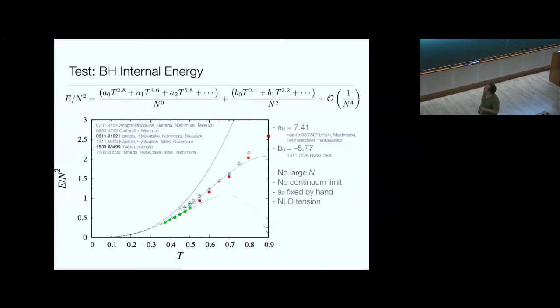One of the things people like to compare is the internal energy of the black hole. Because this thing, at least at the very low temperature limit, at large n, has a definite prediction from supergravity. That statement is that this coefficient here, a₀, is some known number 7.41. The form of this expansion, t^2.8, t^4.6, t^5.8, and these 1/n² corrections, these things are dictated by string theory. The powers are known, but the coefficients, these a₁, a₂, and b₁, no one has managed to calculate with pen and paper before.